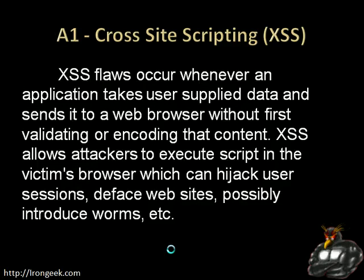The first one we'll cover, and probably the one we'll spend the most time on, is cross-site scripting. It's called XSS because CSS was already taken by cascading style sheets. To define it — and I've copied a lot of this liberally from the OWASP website, which is permissible as long as I tell people where I got it from — an XSS flaw occurs whenever an application takes user-supplied data and sends it to a web browser without first validating and encoding that content. XSS allows attackers to execute script in the victim's browser, which can hijack user sessions, deface websites, and possibly introduce worms. I'm also going to include injecting HTML as well, even if it isn't necessarily a true script.